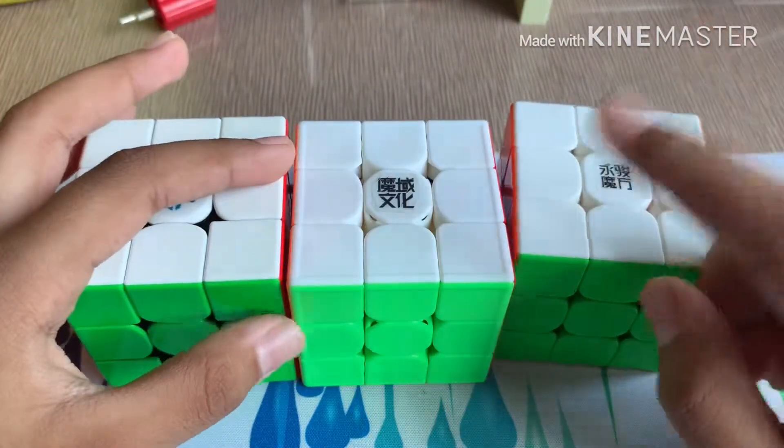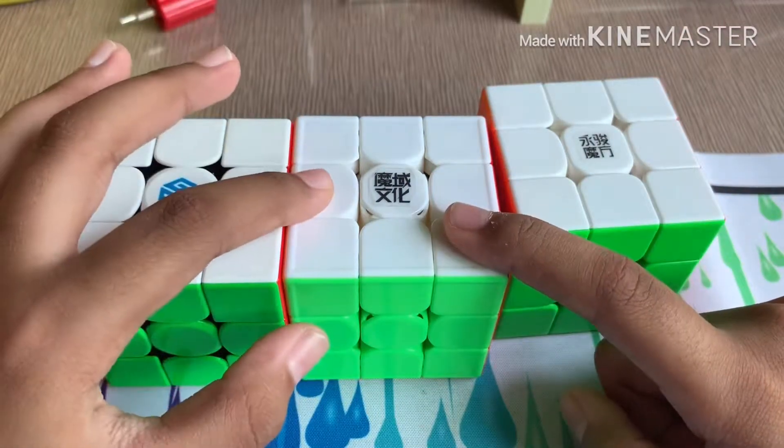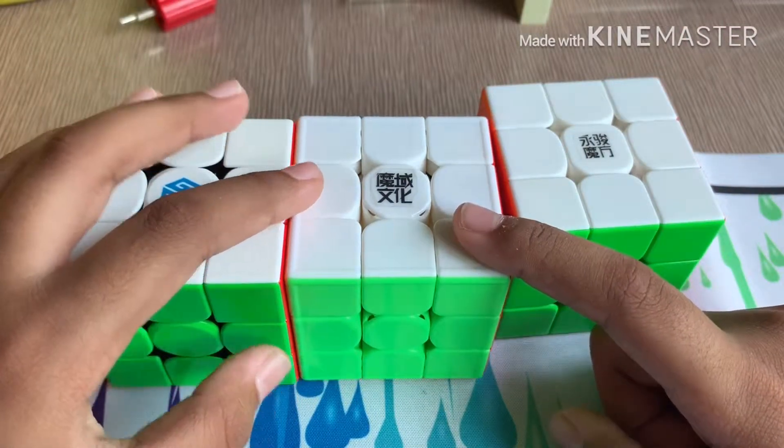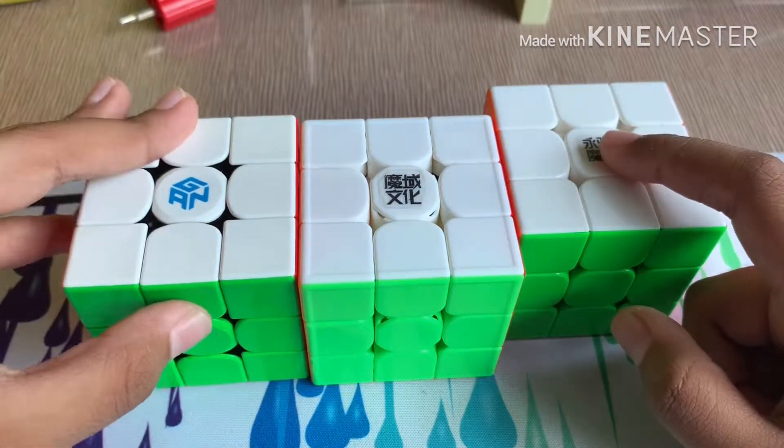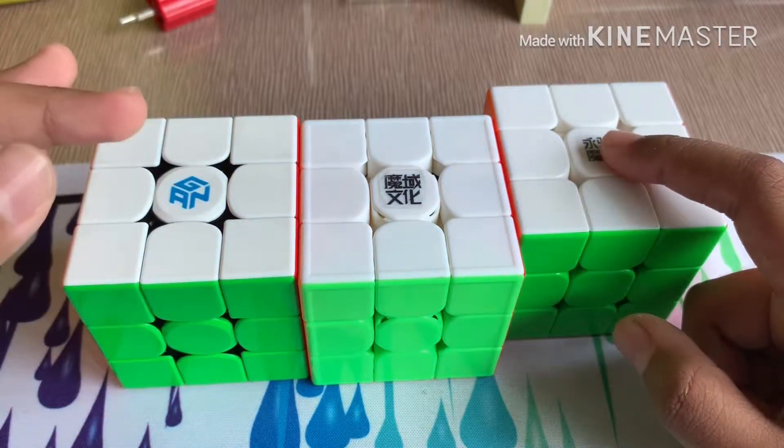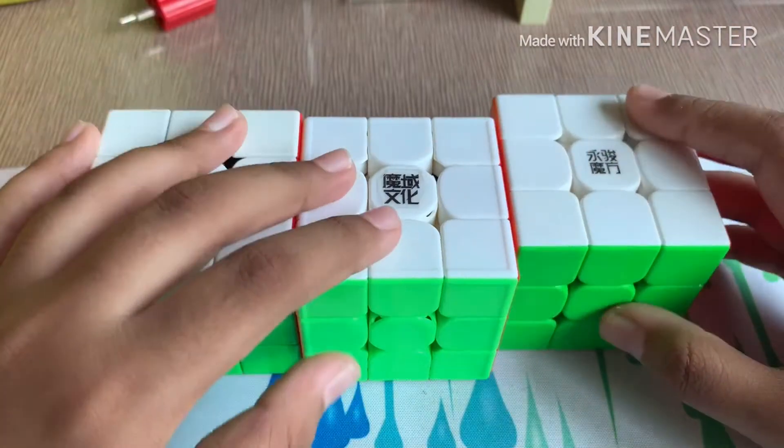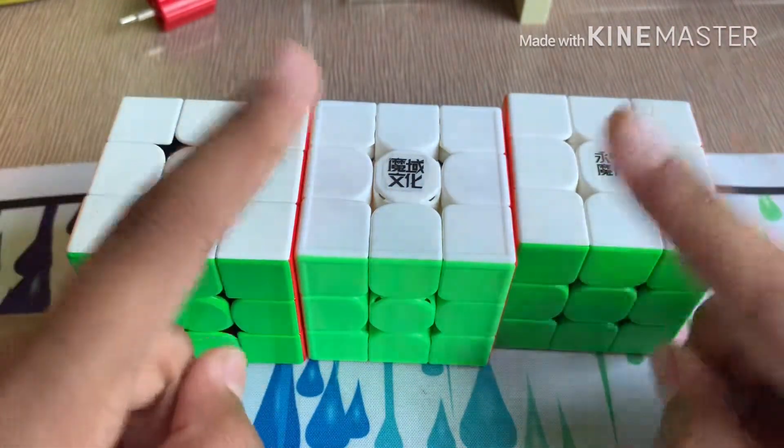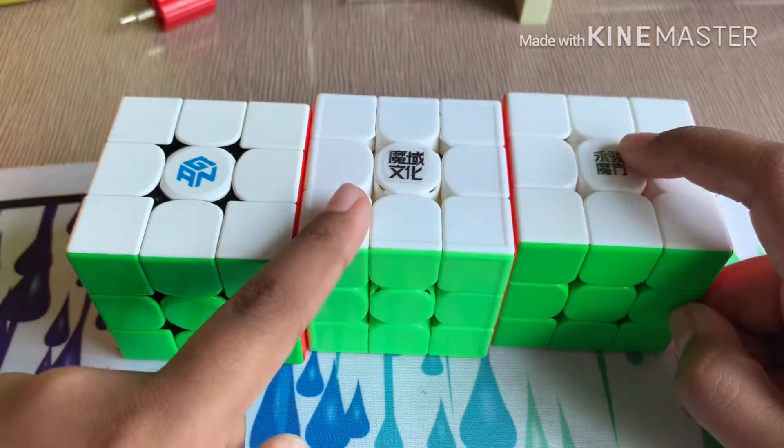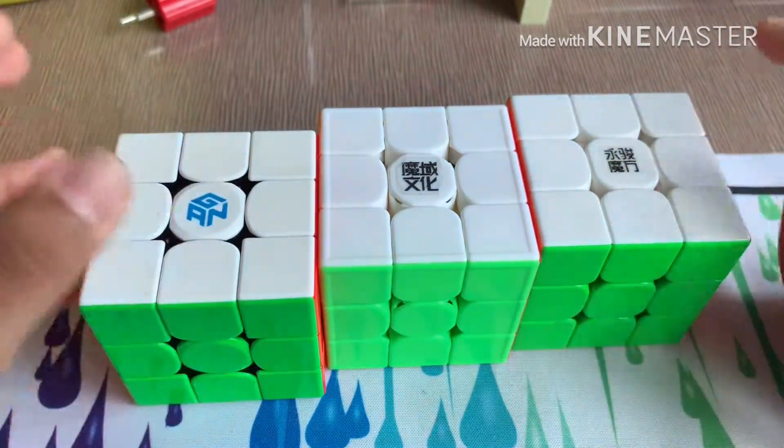Then we have the Weilong GTS 3M and the GAN 356X, which I've been using for the longest time and have broken the most amount of PBs with. I've been using this cube for about three months, this for three weeks, and this for like 12 hours.